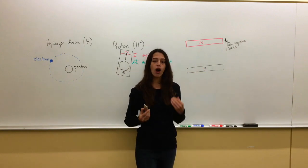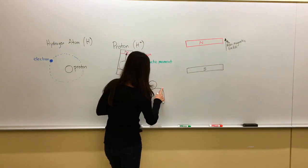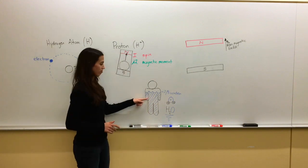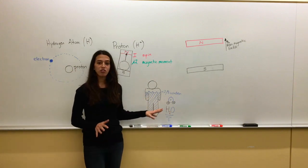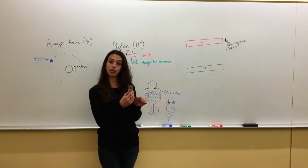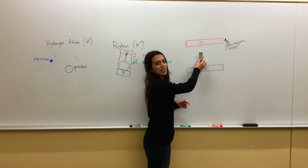Now remember, all of this is happening inside our bodies. So where do we have hydrogen in our bodies? Our bodies are mostly made up of water, H2O, so hydrogen atoms are everywhere. Now we have these little teeny tiny bar magnets within molecules in our body, and they're aligned to this big magnetic field.